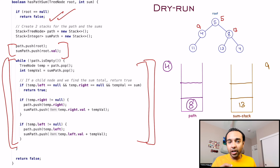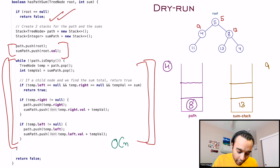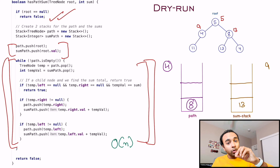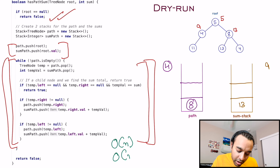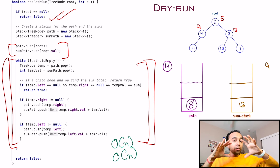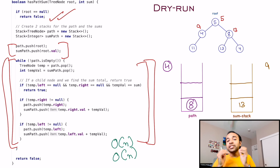The time complexity of this solution is O(n) because you are iterating through all the nodes only once, and the space complexity is also O(n) because you need space to maintain both stacks.